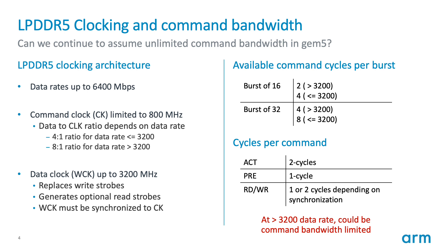Looking at LPDDR5, it has redefined the clocking architecture. It supports data rates up to 6400 megabits per second but defines a command clock limited to 800 megahertz. It also defines a separate data clock that runs up to 3200 megahertz, and with dual data rate capture and transfer we get 6400 megabits per second. This means we no longer have a 2:1 ratio for data to command clock — instead we have 4:1 at lower data rates and 8:1 at higher data rates.